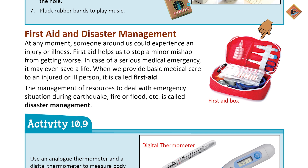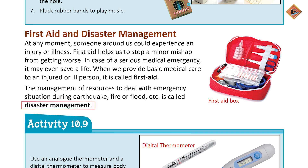First aid box ke andar aap dekh sakte hain kuch medical instruments — jisme scissor hai, blood pressure ki machine hai, aur kuch tablets padi hui hain jo hum fori taur pe kisi bimari ya injury ki soorat mein istemal kar sakte hain. Isi tarah ab main aapko disaster management ke baare mein bataati hoon: the management of resources to deal with emergency situations.